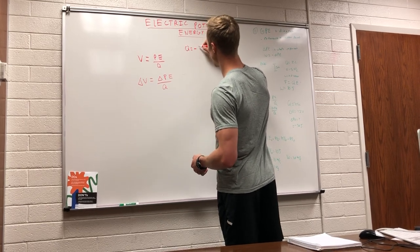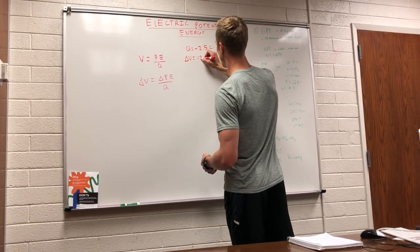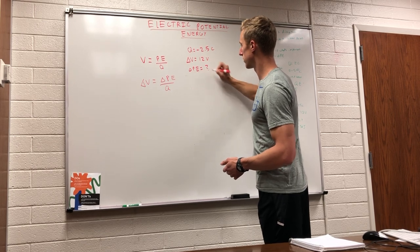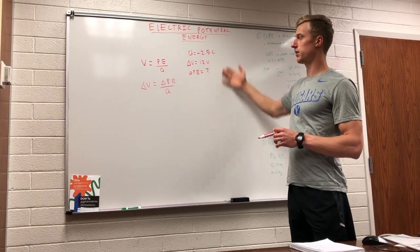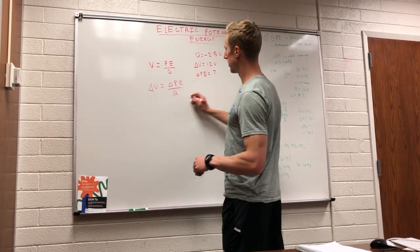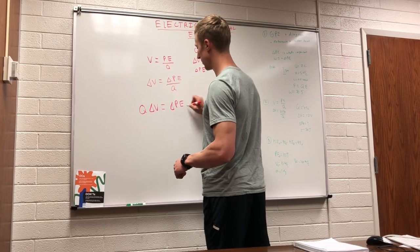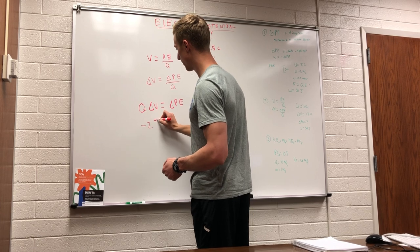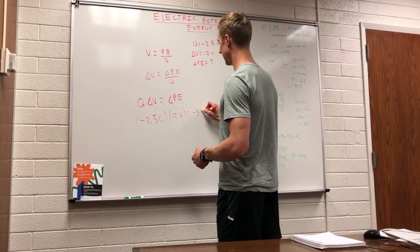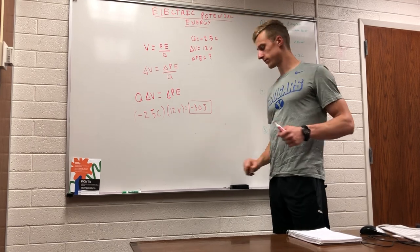Here's another quick practice problem. The charge is equal to negative 2.5 coulombs and the change in voltage is 12 volts. We want to know what the change in potential energy will be. Pause the video and try it. To solve, we multiply q over to the other side: q times the change in voltage equals the change in potential energy. Plugging in: negative 2.5 coulombs times 12 volts gives us negative 30 joules for the change in potential energy.